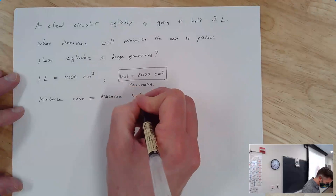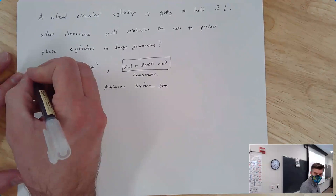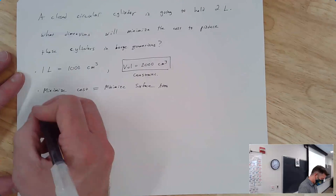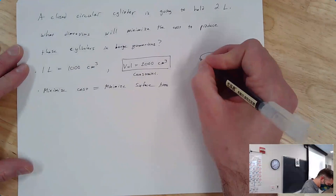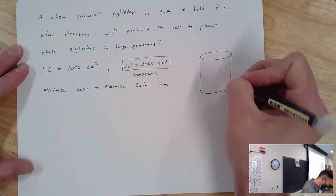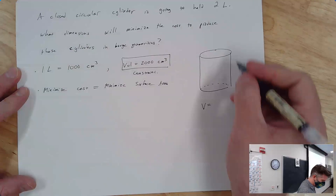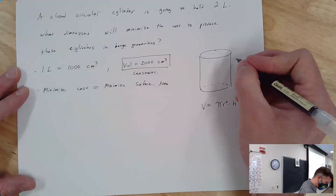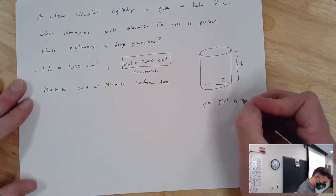The volume of a cylinder is base area times height: pi r squared times h, and we want that to equal 2,000. For the surface area: it has two circles — a top and a bottom — giving 2 pi r squared. The around part, if you unroll it like a paper towel, becomes a rectangle with height h and width equal to the circumference 2 pi r, giving area 2 pi r h. So surface area equals 2 pi r squared plus 2 pi r h.